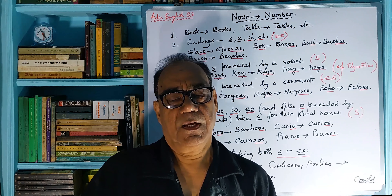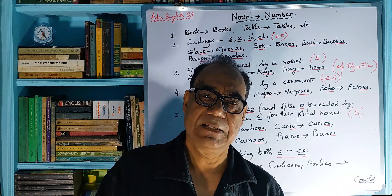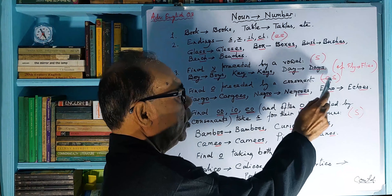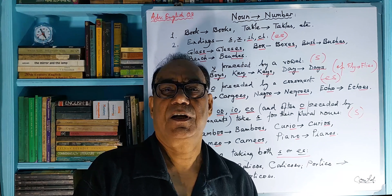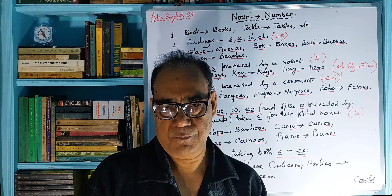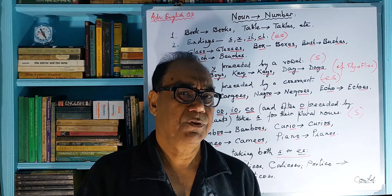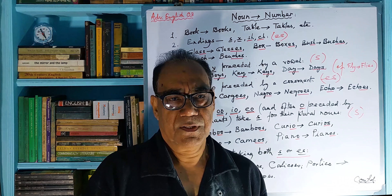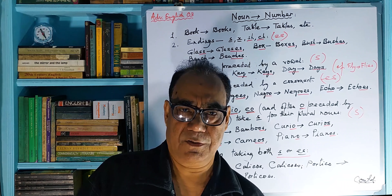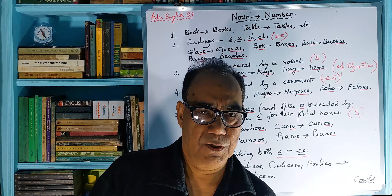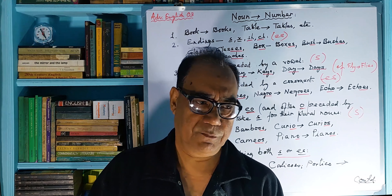Ordinarily, a plural form is formed by adding an S or ES to the existing singular noun. It looks very easy, but sometimes there are certain tricky areas that make things quite difficult, and it is something that we should take special care of.